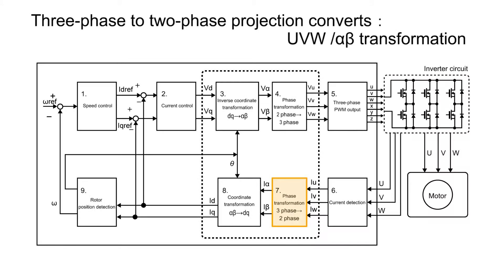3-to-2 phase projection converts currents flowing through the U, V, and W phases of a motor — IU, IV, and IW — into stationary coordinates I-alpha and I-beta. This transformation is called Clark transformation.